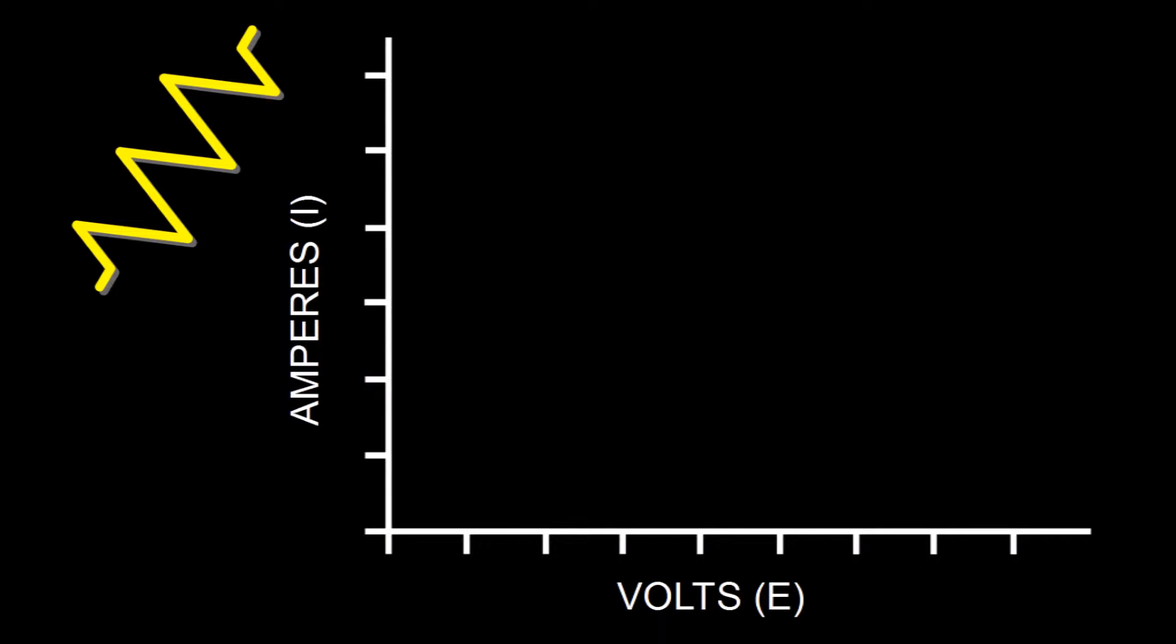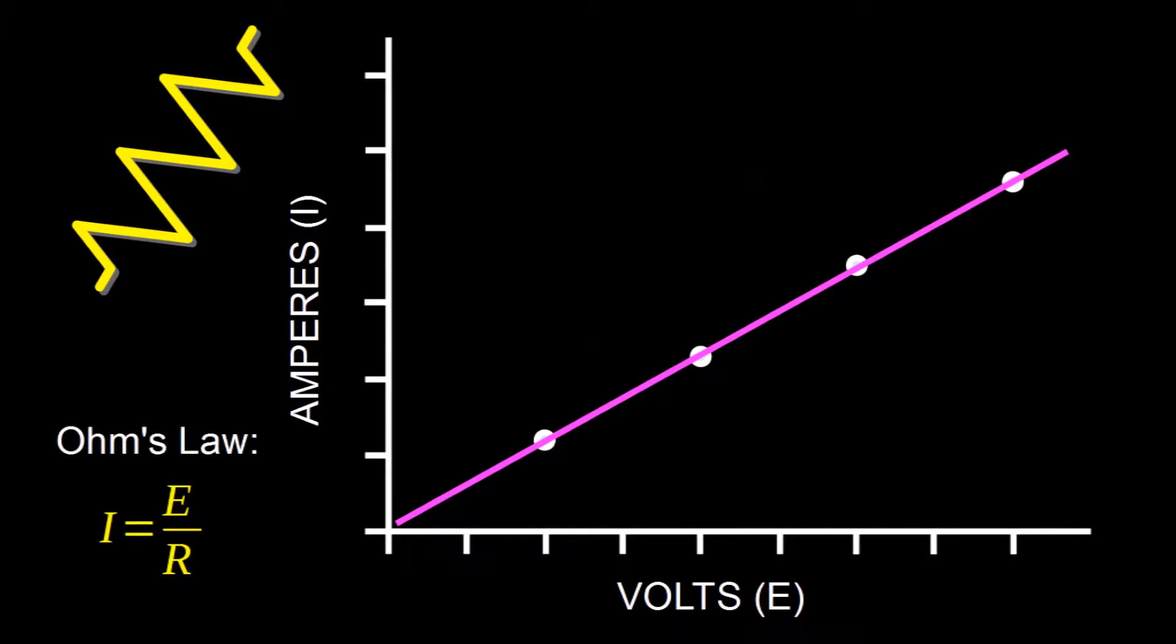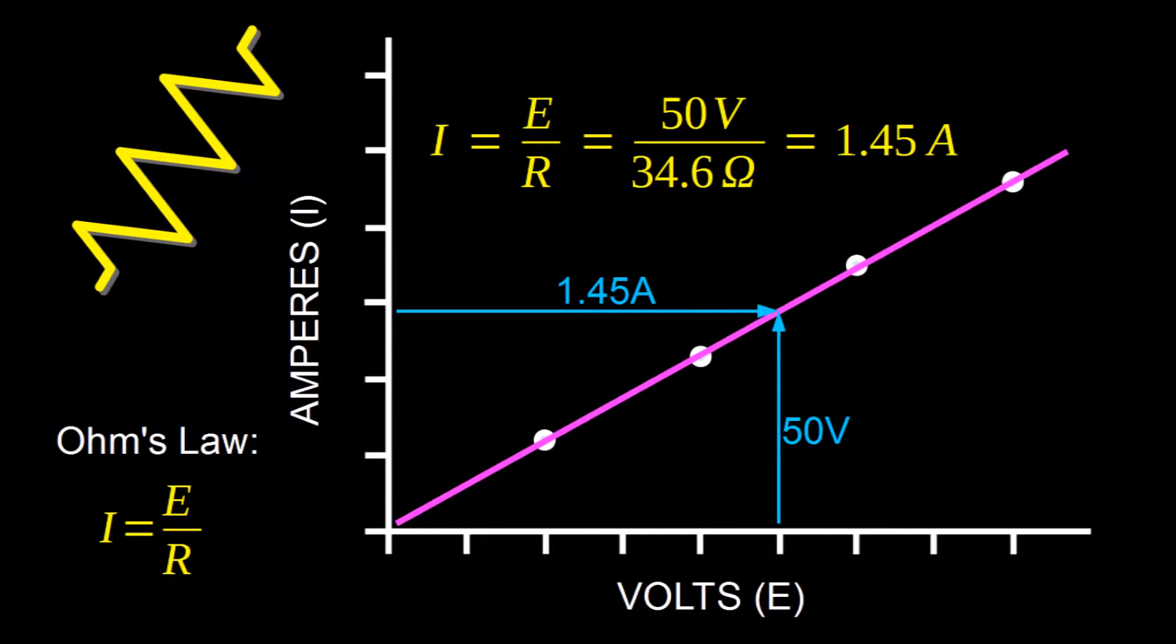When we plot these four points on a graph, we can draw a straight line through the points and extrapolate the line to any suitable voltage. It also means that Ohm's law will work consistently. For example, at 50 volts, the current calculates to 1.45 amps using Ohm's law, and that lands directly on the line. In other words, we have a linear resistor.